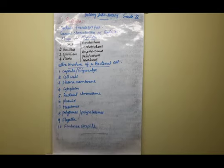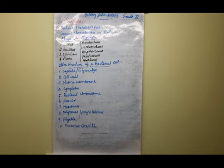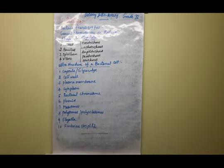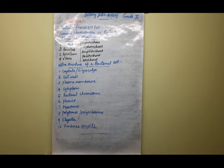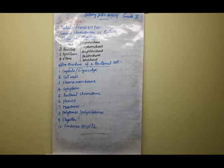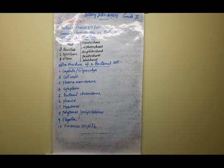Sexual reproduction also takes place in bacteria through recombination and gene transfer methods. The sexual reproduction methods are conjugation, transformation, and transduction. What are the sexual methods of reproduction? Conjugation, transformation, and transduction.